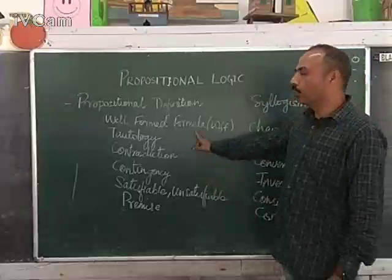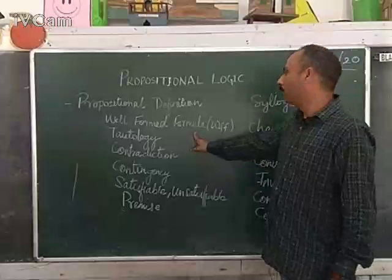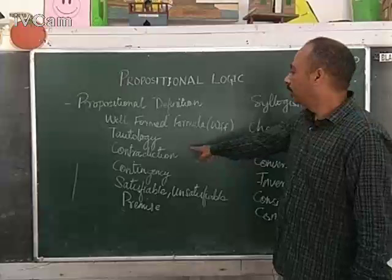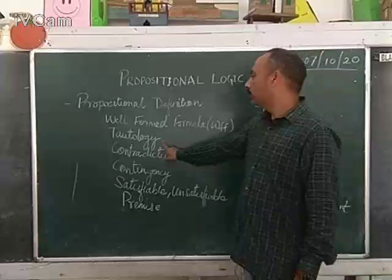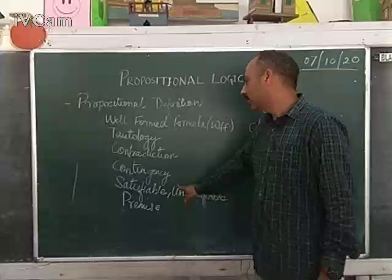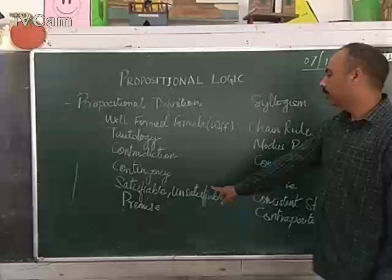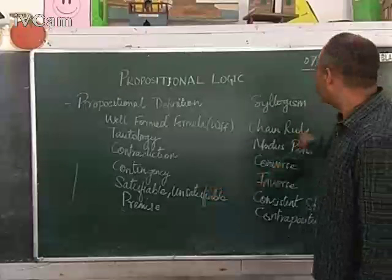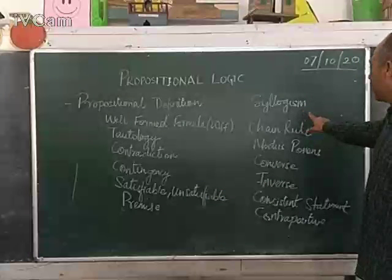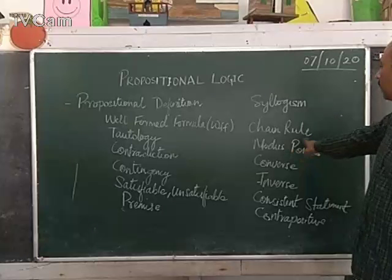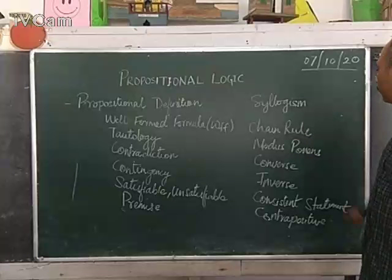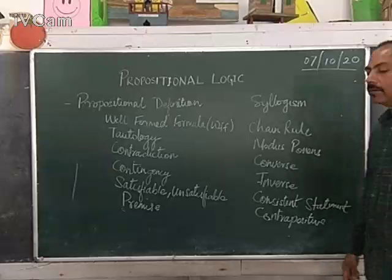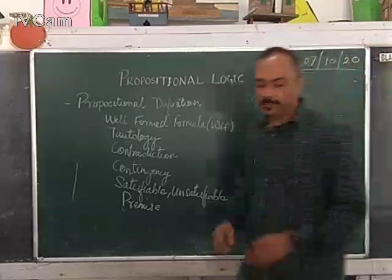Today we will be discussing the following terminologies: well-formed formula (WFF), tautology, contradictions, contingency, satisfiable, unsatisfiable, premise, syllogism, chain rule, modus ponens, converse, inverse, constant statement, and contrapositive statement.